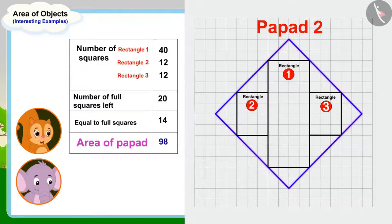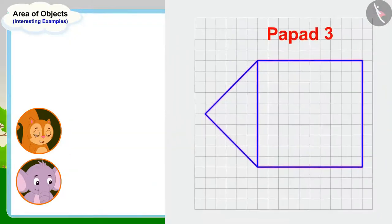Appu, the area of this papar is 98 square centimeters. Chanda said excitedly. Now all we have to do is to find out the area of this last papar and then we will know which of these papars is the largest.